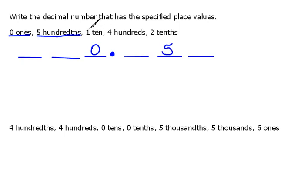Then it says to do one ten. Well, that's the whole number part. So ones, tens would go here. I'm going to put a one there. Four hundreds, that's in the whole number part. So ones, tens, hundreds would go here.